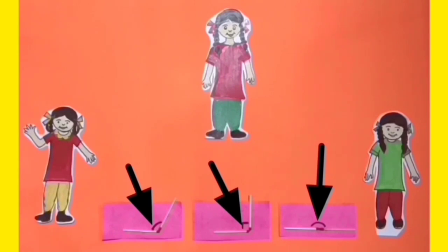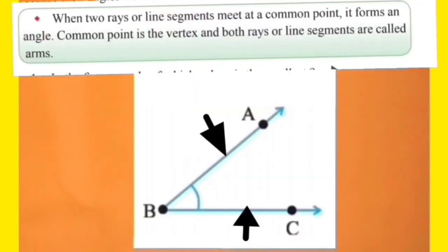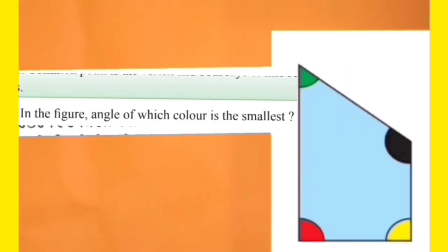So dear students, from this we come to know that when two rays or line segments meet at a common point, it forms an angle. Common point is the vertex and both rays or line segments are called arms.